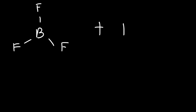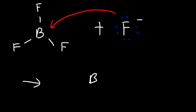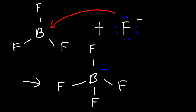Now let's say if we had BF3 — it doesn't have a positive charge, it's neutral — and so this is going to be the electrophile. Let's react it with a nucleophile; in this case fluoride, which is electron-rich and has a lot of lone pairs. The nucleophile is going to attack the electrophile, so this is a typical Lewis acid-base reaction, and now the boron carries the negative charge.